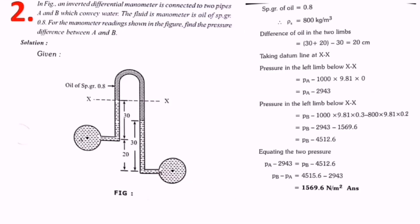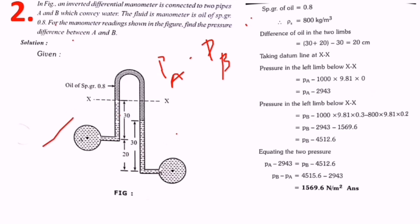Now the second question: an inverted differential manometer is connected to two pipes A and B which convey water. The fluid in the manometer is oil of specific gravity 0.8. From the figure, the manometer readings are: this side is 30, this side is 20, and this is 30. The oil occupies the section between these readings. The question asks us to find the pressure difference, pa minus pb.